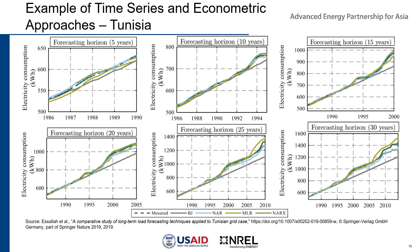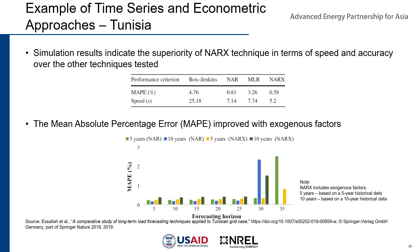This figure shows the results from the Tunisian study. The electricity forecast across the four selected techniques were compared with actual data in Tunisia from 1986 to 2010. The Box-Jenkins technique indicates the poorest performance. In terms of speed and accuracy, the NARX technique indicates the best performance. The chart compares the MAPE, or Mean Absolute Percentage Error, between NAR and NARX. At a 30-year forecasting horizon, NARX has lower error than NAR using a 10-year historical data, indicating the value of adding exogenous variables in the forecast.